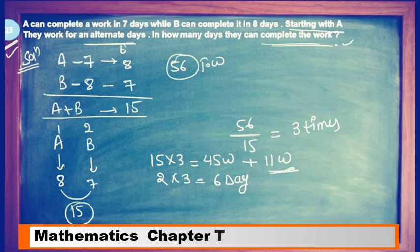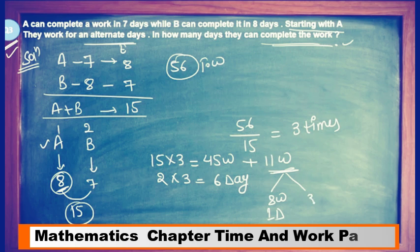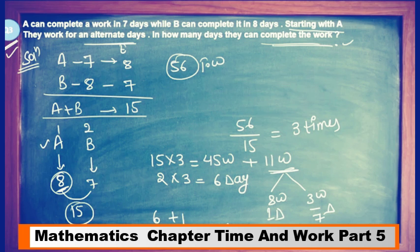11 units of work remains as extra work, and it will be done again by A first. A will complete 8 units in 1 day. Then 3 units remain, which will be done by B. B will take 3/7 days for 3 units. So total days: 6 days plus 1 day plus 3/7, giving 7 and 3/7 days total.